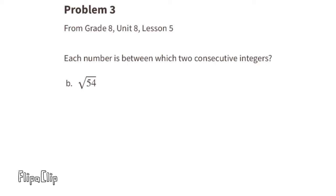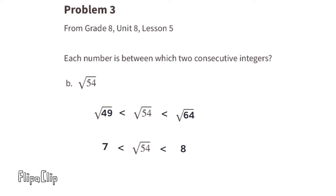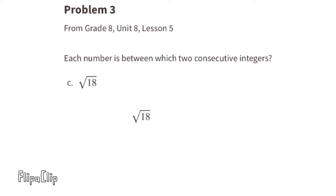Part b: the square root of 54. The square root of 54 falls somewhere between the square root of 49 and the square root of 64, because 7 times 7 equals 49 and 8 times 8 equals 64. The value for the square root of 54 would fall somewhere between 7 and 8.